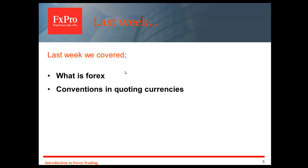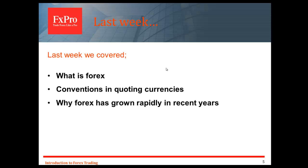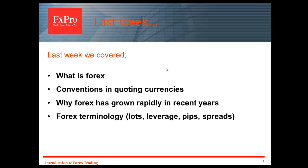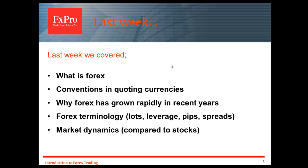We looked at the conventions in quoting currencies — most of the time the first two letters of the code represent the country, and the last one, D, stands for dollar. There are exceptions such as EUR. We also covered the fact that the base currency is the first one quoted. We looked at why Forex has grown rapidly in recent years even when other asset classes weren't doing so well during the financial crisis. We covered lots of terminology: lots, leverage, PIPs and spreads. We also touched on the dynamics of why Forex is different compared to stocks, looked at correlations, and why Forex can complement other asset classes in a wider investment strategy.